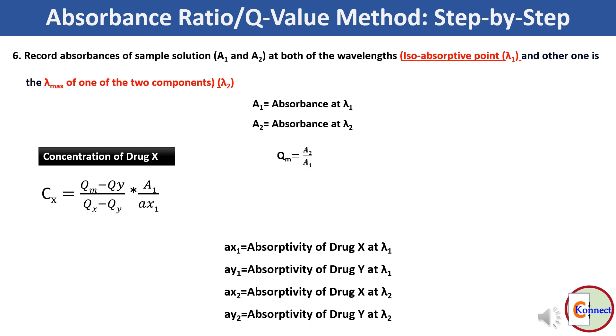In this formula, Qm is the ratio of A2 and A1, Qx is the ratio of aX2 and aX1, and Qy is the ratio of aY2 and aY1.